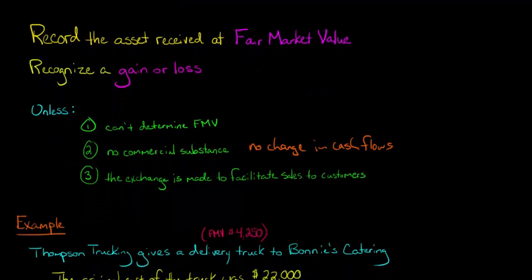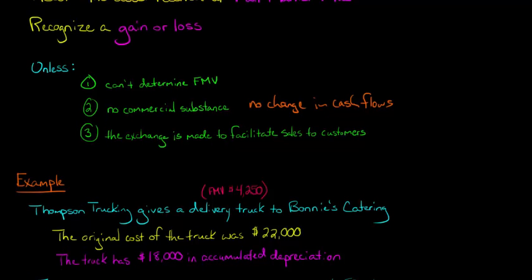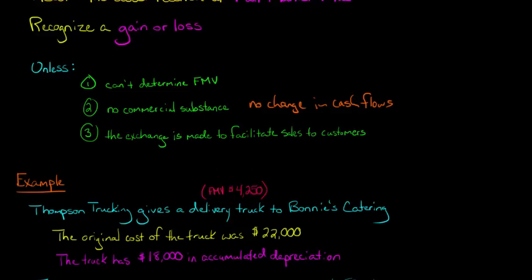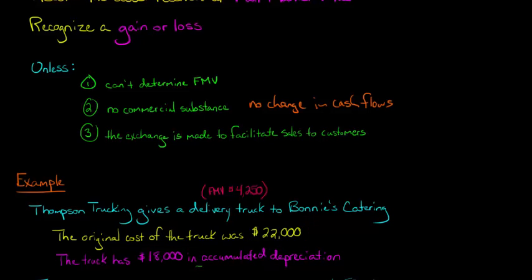Let's walk through an example — it'll make it a little easier to understand. Let's say that we have Thompson Trucking, and Thompson Trucking is going to give a delivery truck to Bonnie's Catering. That delivery truck has a fair market value of $4,250. Now, the original cost of that truck when Thompson originally bought it years ago was $22,000, but since that time Thompson has taken $18,000 in depreciation on the truck, so there's $18,000 in accumulated depreciation on the truck. Why this is all relevant will be apparent in a minute when we go to do the journal entry.